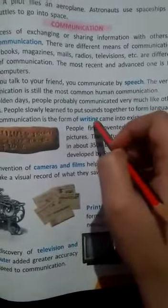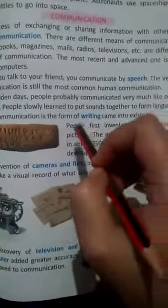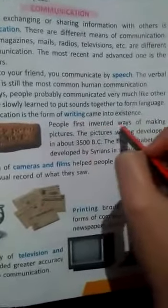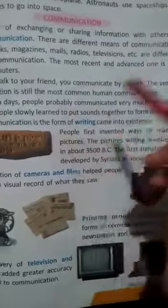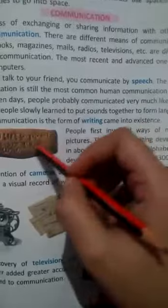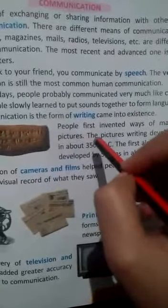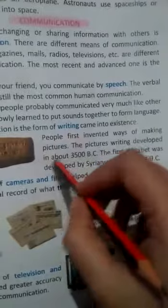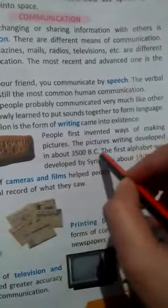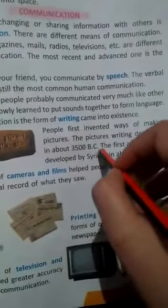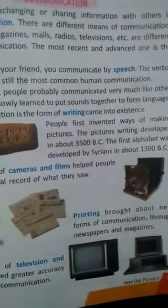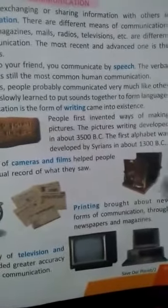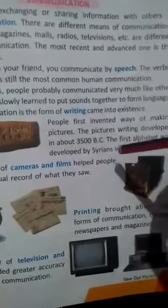Then which type of communication came? Writing communication, in which people started writing. People first invented ways of making pictures and communicated with the help of pictures. This picture writing developed in about 3500 BC, which is very many many years ago.